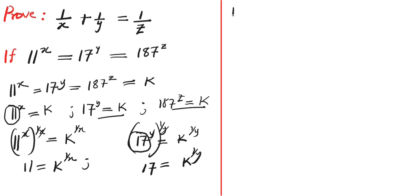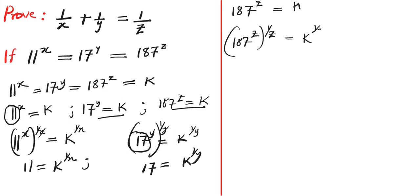We do the same for 187 power c. Multiplying both sides by 1 over c, the c cancels, so we have 187 equals to k power 1 over c. Now we have all three results: 11 equals k power 1 over x, 17 equals k power 1 over y, and 187 equals k power 1 over c.